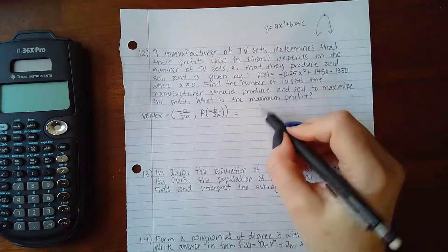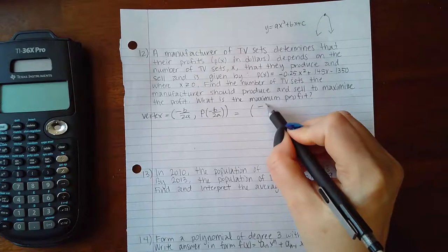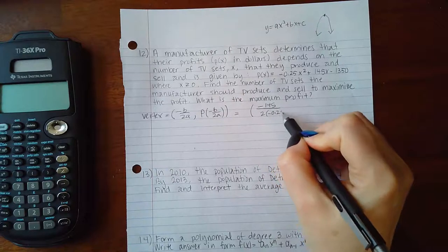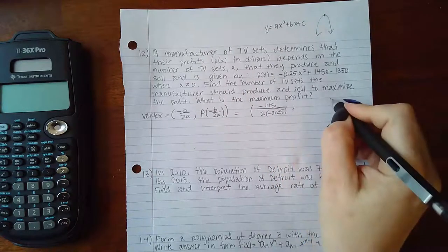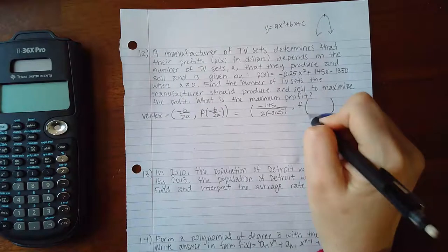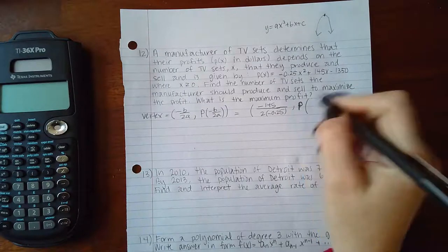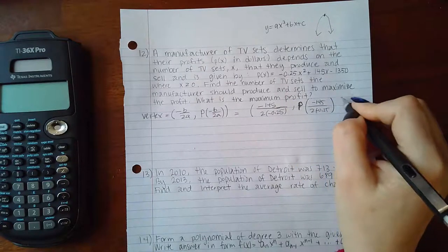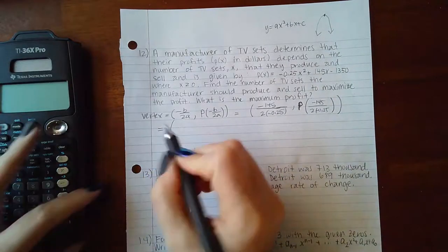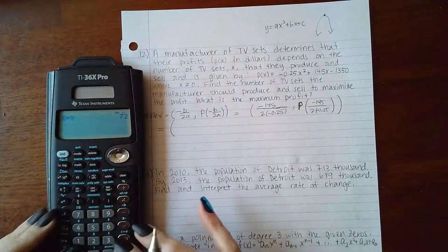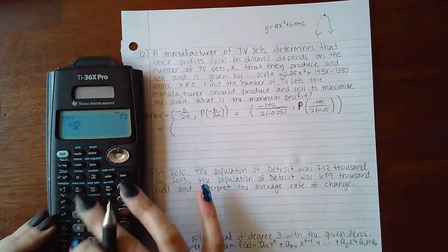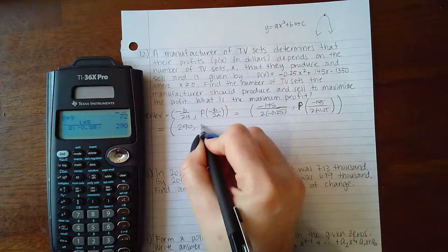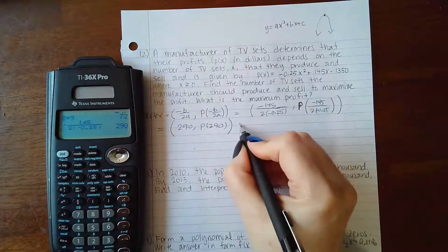For this problem, b is negative 145 and a is negative 0.25. Let's simplify that. We get negative 145 over 2 times negative 0.25, which gives us 290. Then we still have to figure out what P(290) is.